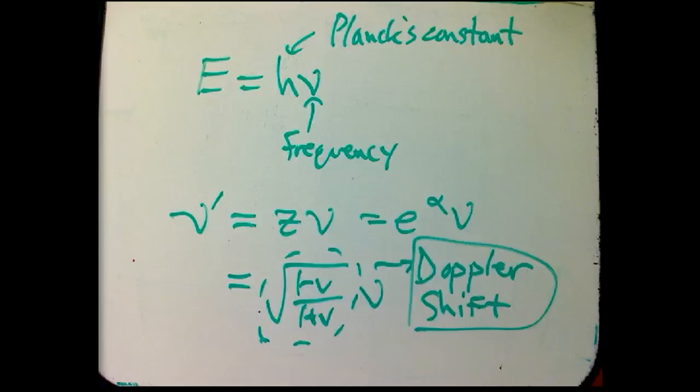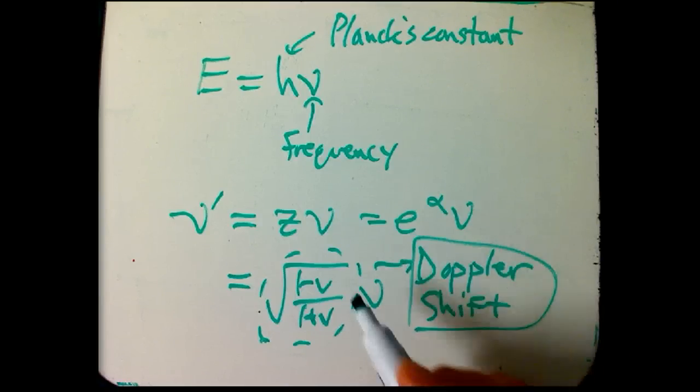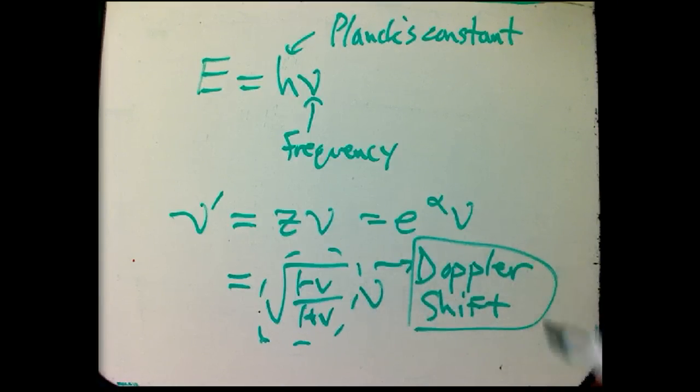So a nice side effect of the way we derive the Lorentz transformation is we actually kind of secretly derived the Doppler shift formula first because it was simpler, because null vectors are simple and nice and pretty and intrinsic to the geometry. And it turns out that that's the Doppler shift formula.